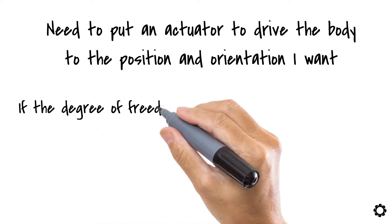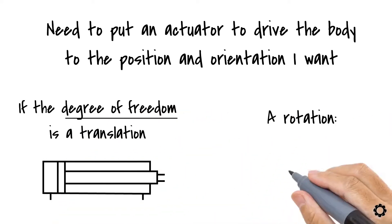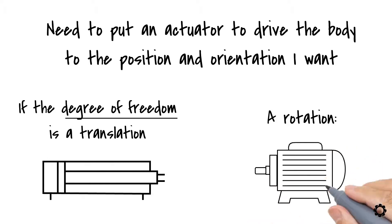If the degree of freedom is a translation, I could use, for example, a hydraulic or pneumatic cylinder. And if the degree of freedom is a rotation, I could use an electric motor for the same purpose. You get the idea.